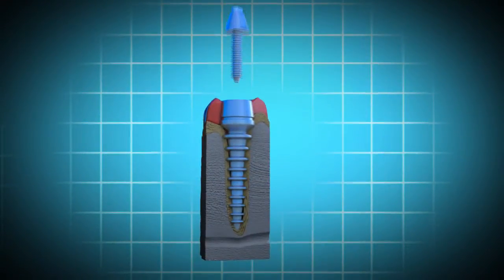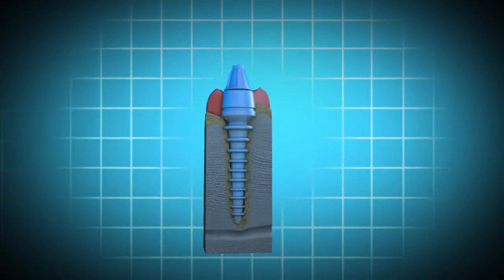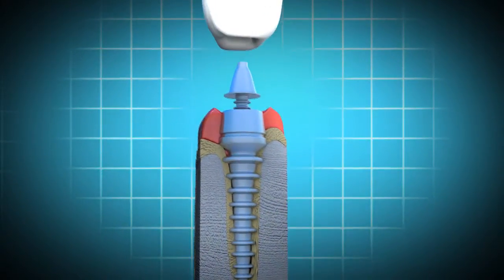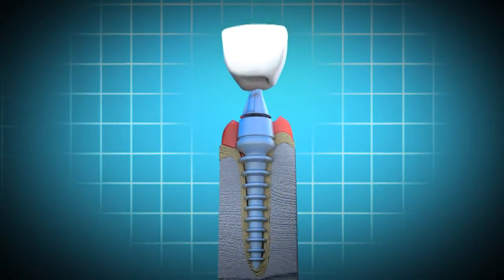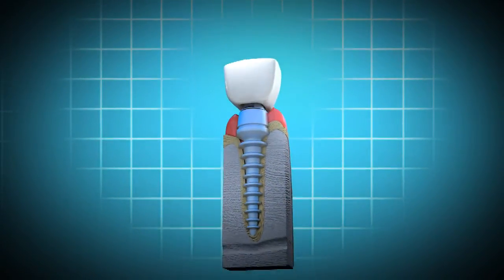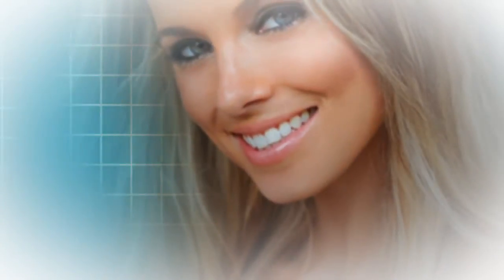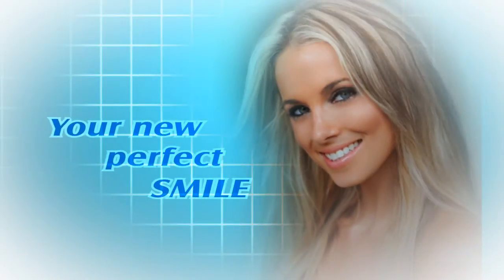Phase 2: An abutment is placed on the implant, then the new tooth crown is placed on the abutment. These implants will feel and function like your natural teeth. Now you're ready to show the world your new smile.